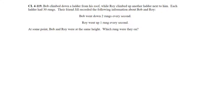Question 119: Bob climbed down a ladder from his roof while Roy climbed up another ladder next to him. Each ladder had 30 rungs. Bob went down two rungs every second and Roy went up one rung every second. At some point they were at the same height — which rung were they on? This could be solved by drawing it out or as a system of equations. I'm going to set it up as a system and show you how it's done, though either approach is fine.